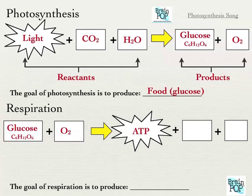ATP is what our cells run on — the type of energy our cells can actually use. It's a chemical molecule. It stands for adenosine triphosphate. Adenosine triphosphate is what ATP stands for. Basically, anything our cells do that requires energy, that's what they use. Just like electronics in your house — your phone runs on electricity. That's one type of energy. Wind has energy, sound is a type of energy, but those aren't types of energy your phone can actually use. Same thing in cells. Glucose has energy in it, sunlight is energy, but your cells can't run on that. They run on this molecule called ATP. Your cells constantly need a source of this ATP.